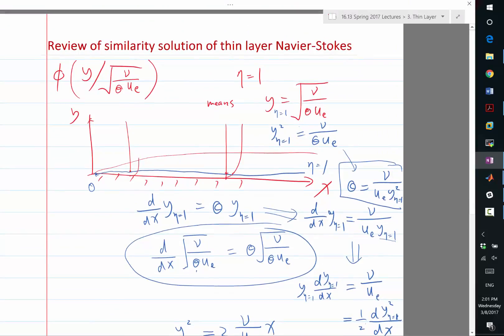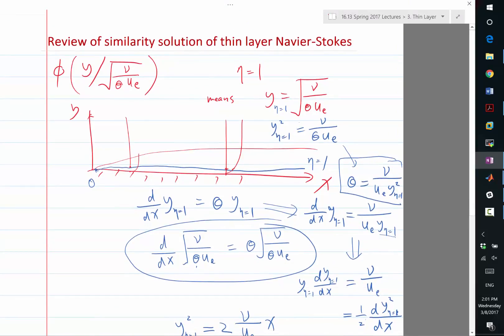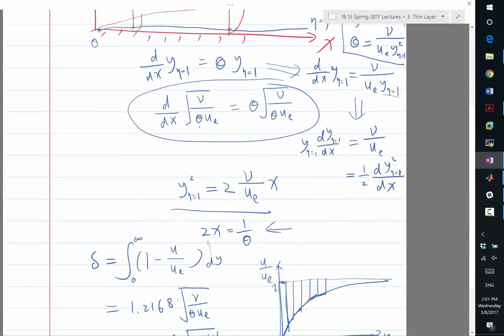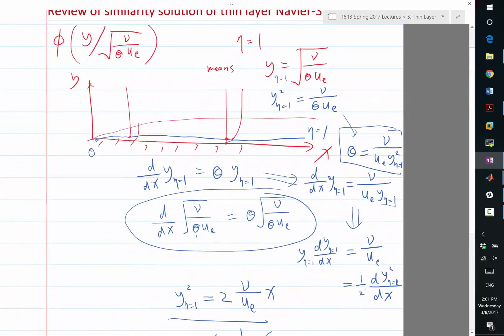The streamline outside the boundary layer is going to be the same for two cases. One case is that you have a viscous flow with a boundary layer with a displacement thickness defined in this way to be a certain function of x.